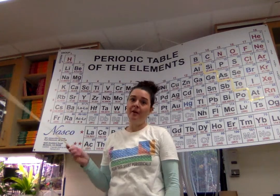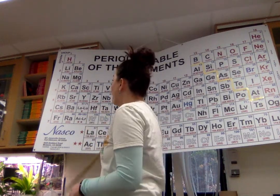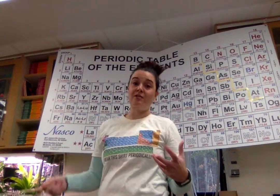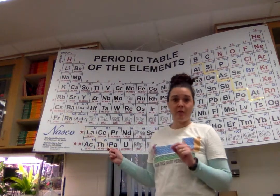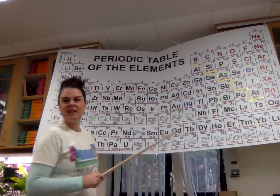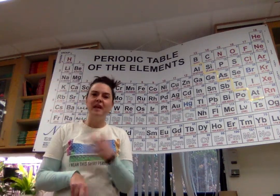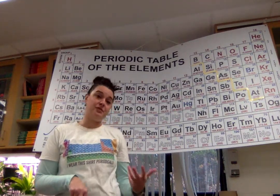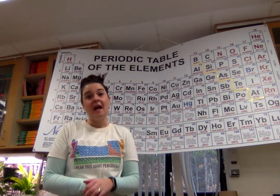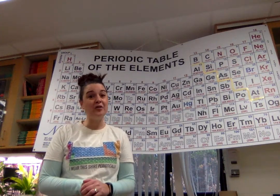Any element in this first column is going to have one outer electron. We start with something really simple like hydrogen - it only has one electron. All the way down to francium, which has seven shells of electrons and still only has one outer electron. These are really reactive elements because they just want to get rid of that one electron. So family 1, or group 1, has one valence electron. Family 2 follows the rules - they have two outer electrons. And then things get kind of weird in the middle. The transition metals and the rare earth metals do have the same properties of metals, but they sometimes have two outer electrons, sometimes three.